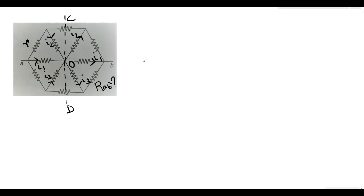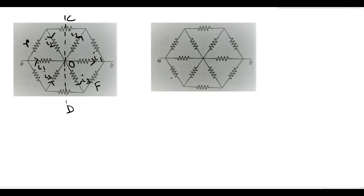If we draw the figure again, we see the currents are the same — as if this line doesn't touch O, it goes like this, and this line also doesn't touch O and goes like this. So these two resistances, small r and r, are in series because the same current flows through them. The equivalent of r and r in series is 2r, and this 2r is in parallel with the single r.